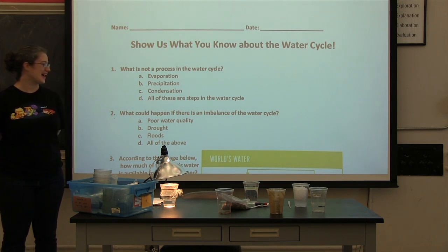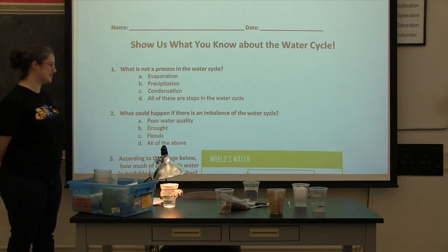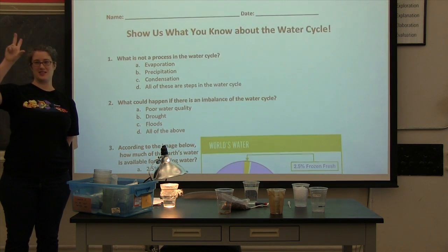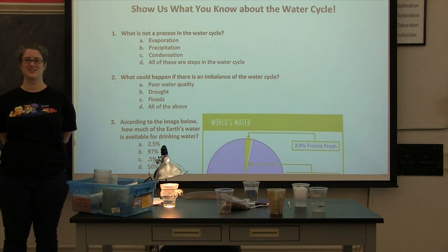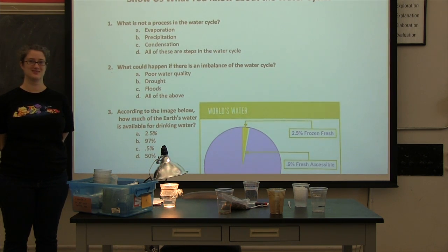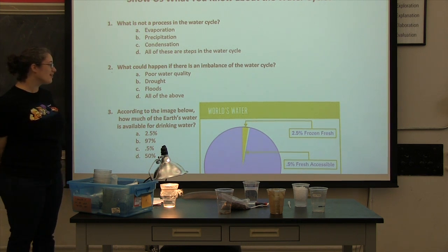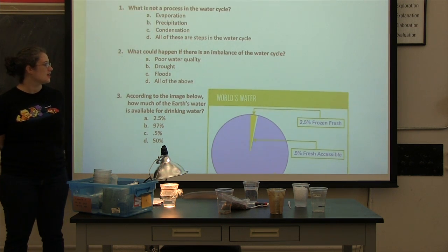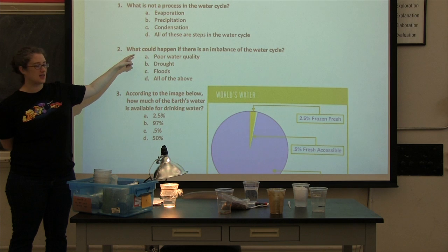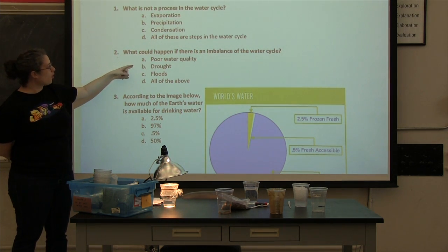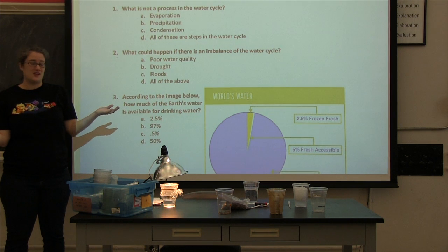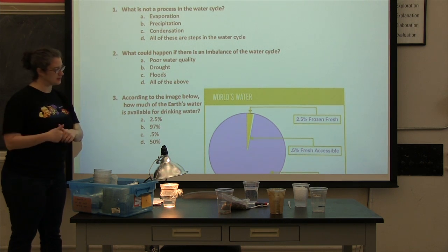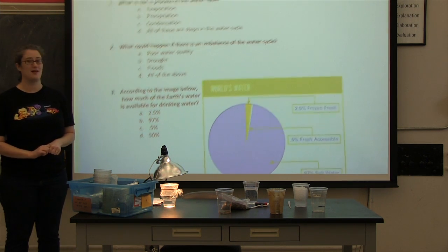Now let's answer number two. What can happen if there is an imbalance of the water cycle? A, B, C, or D? That's right, all of these things can in fact happen. If we have an imbalance of the water cycle, that means that the water can't get filtered like it does when you have an aquifer, or we could have a major drought just like we are having here in Texas, or you could even have a huge flood if you get too much rain, which we probably would like to have here in Texas. So that's right, all of them.